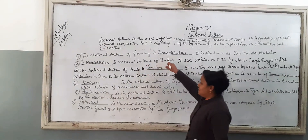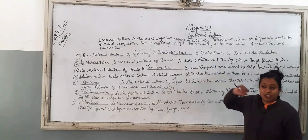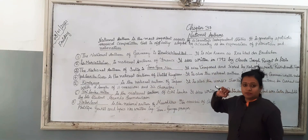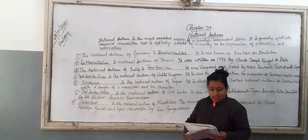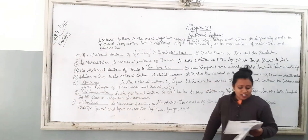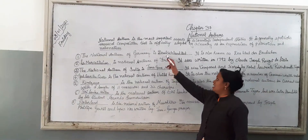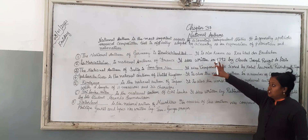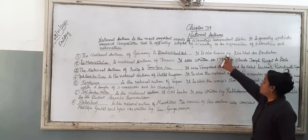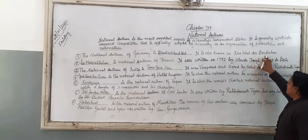The National Anthem of Germany is 'Deutschlandlied'. It is the National Anthem of Germany. It is also known as 'the Deutschlandlied'.